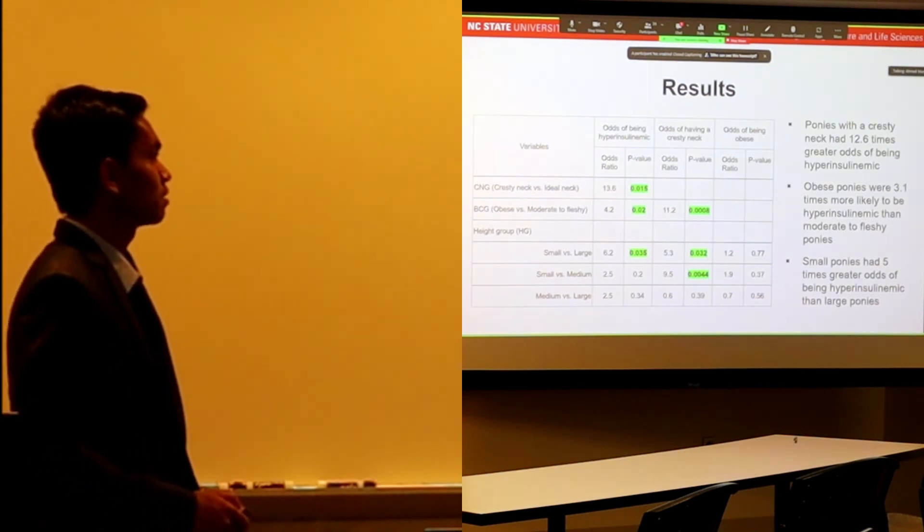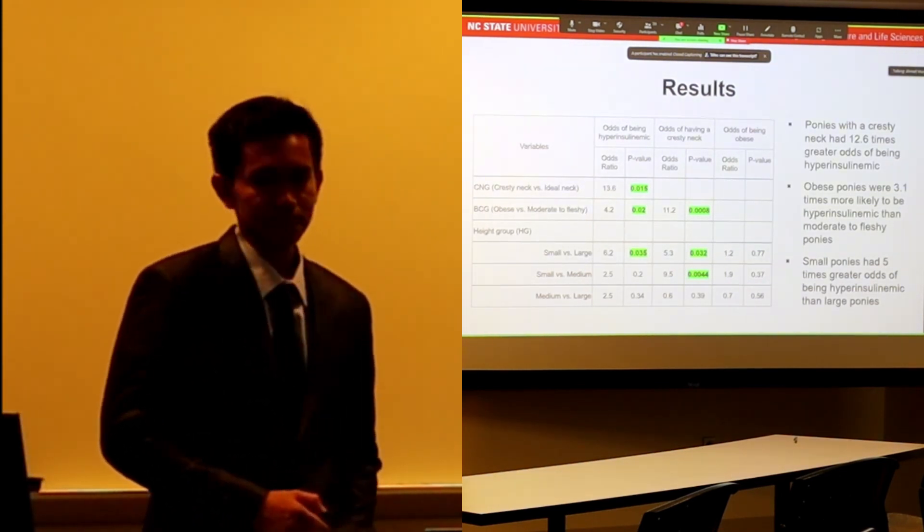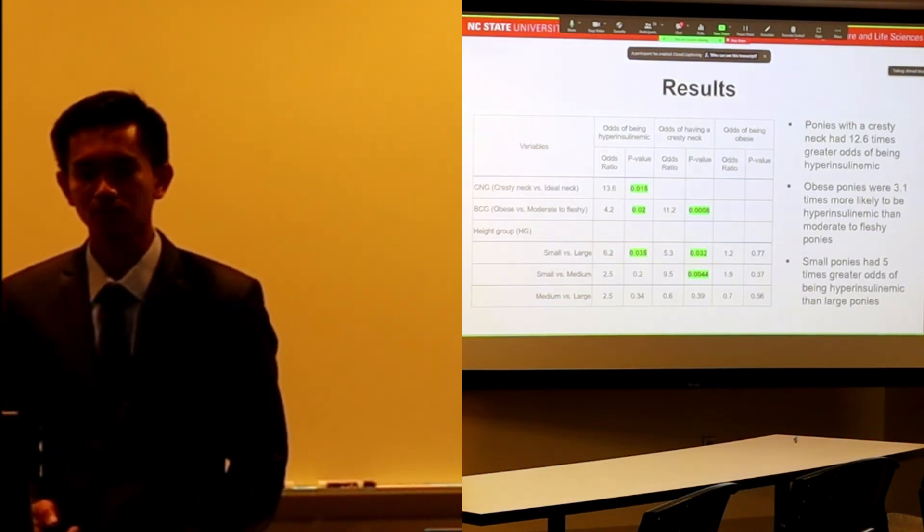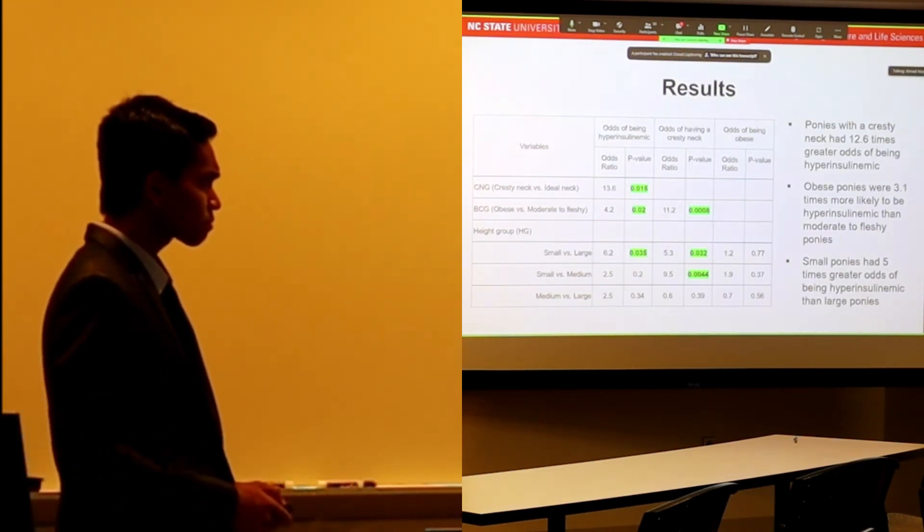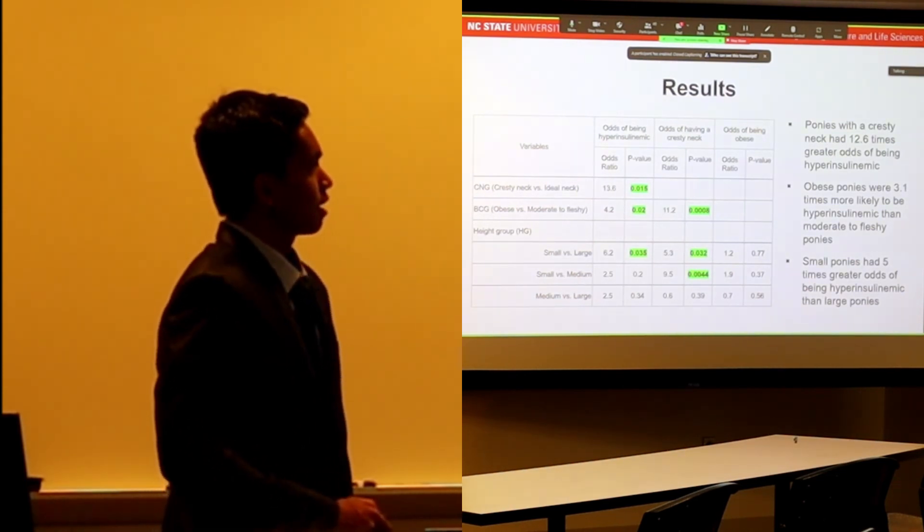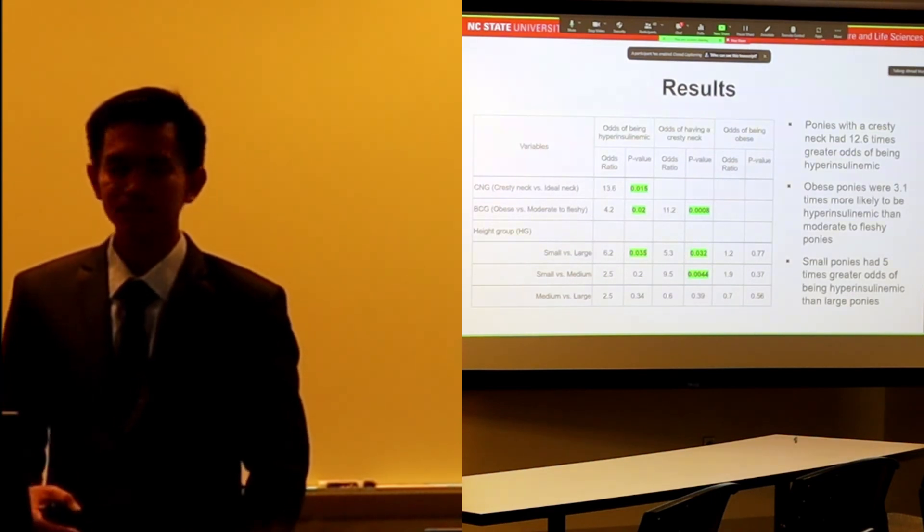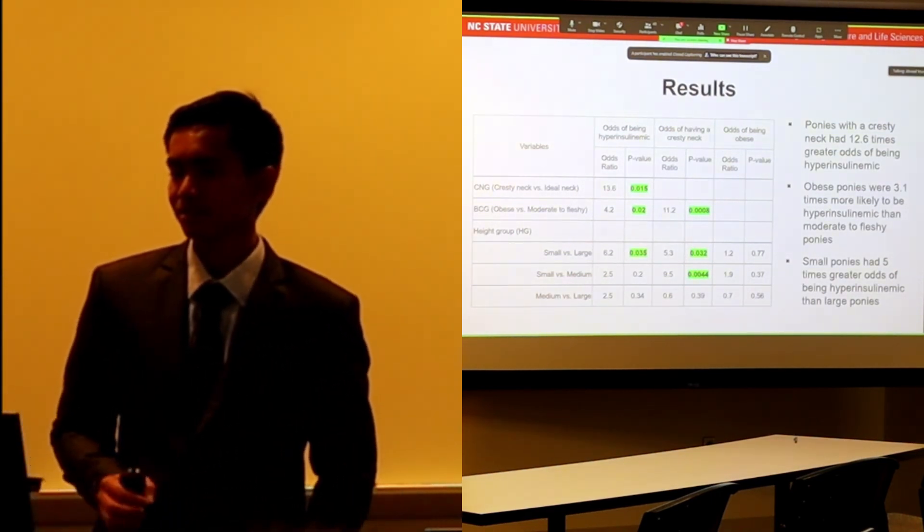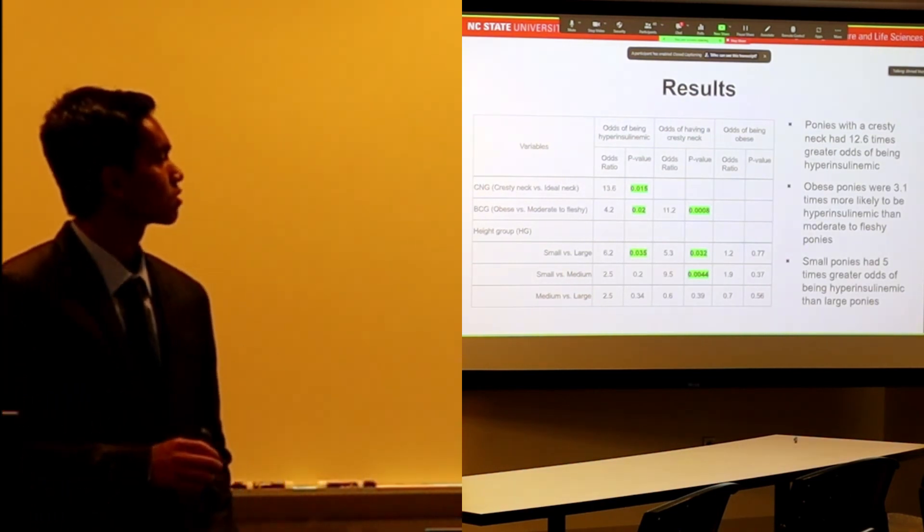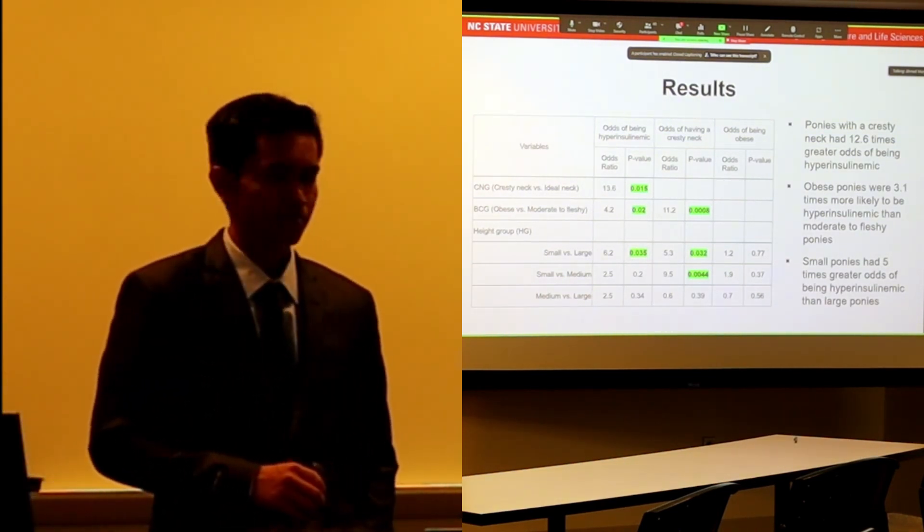We can see that cresty neck score and body condition scores are somehow very correlated. From the logistic regression, we can see that ponies with cresty neck had 12.6 times greater odds of being hyperinsulinemic than ponies with ideal neck.